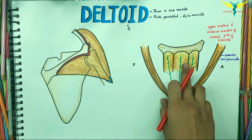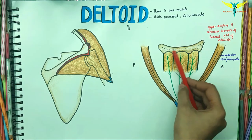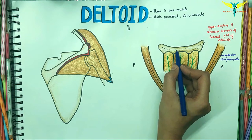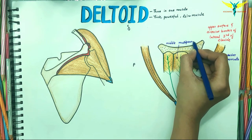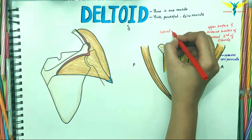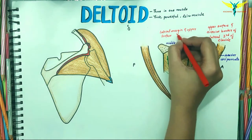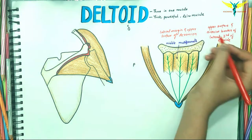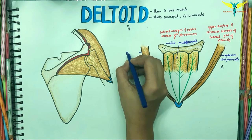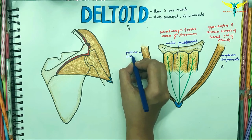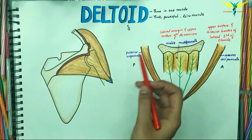The middle multipinnate part arises from the lateral margin and the upper surface of the acromion process. The posterior unipinnate part arises from the lower lip of the crest of the spine of the scapula.